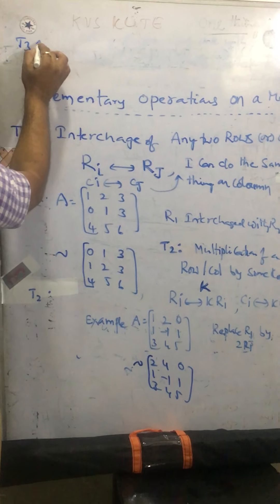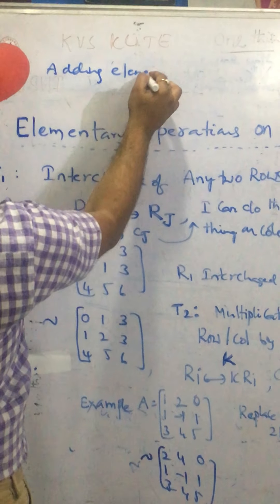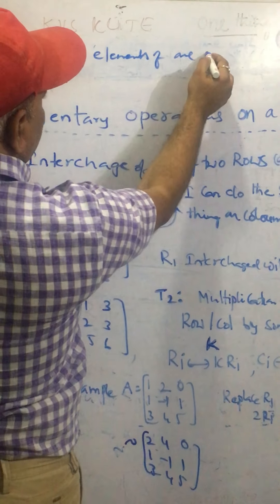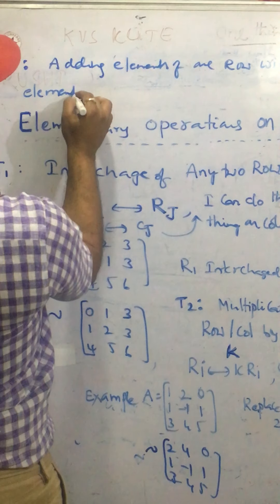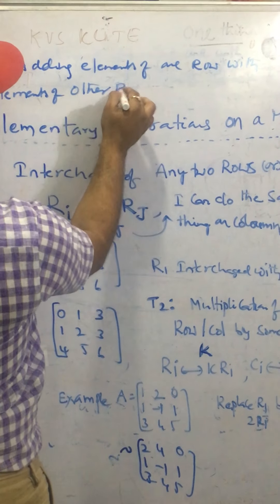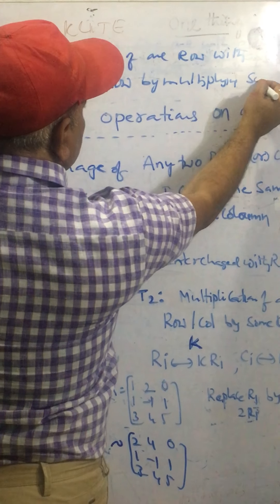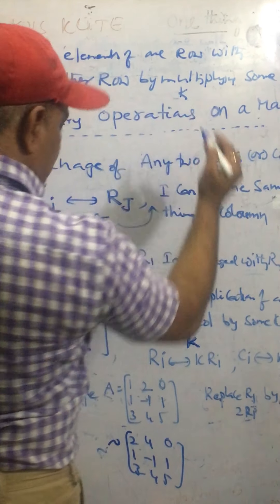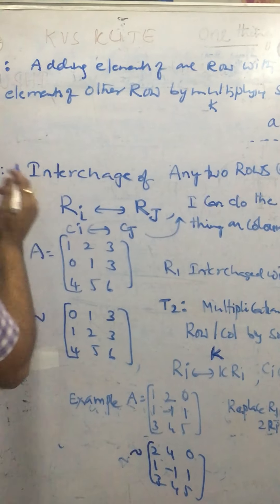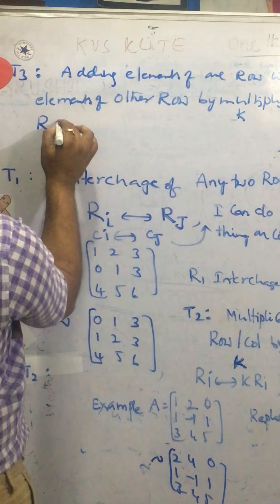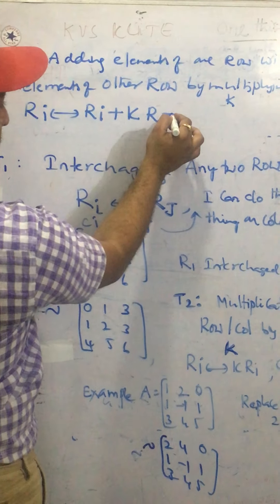When you come to transformation 3, so what it says, adding elements of 1 row with the elements of other row by multiplying some constant K. So if I want to write by using symbol, replacing ith row elements by ith row elements plus K times of jth row elements.